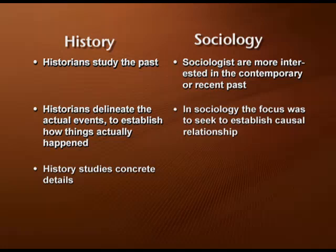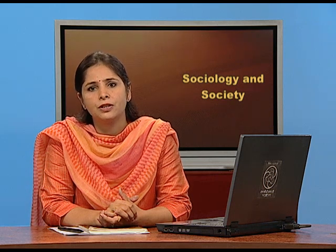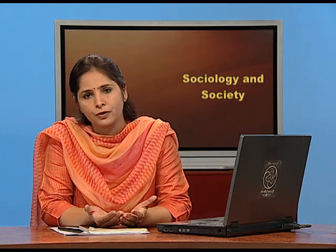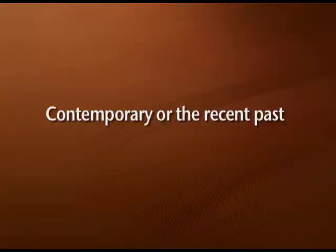History studies the concrete detail — what happened, when it happened, where it happened, and who was involved. But sociologists are more likely to abstract from concrete reality; they categorize and then generalize. This is where the role of Social History comes in — examining what was happening in society at a particular point in time. Sociologists, however, are more concentrated on the contemporary or recent past rather than the study of phenomena from long ago.